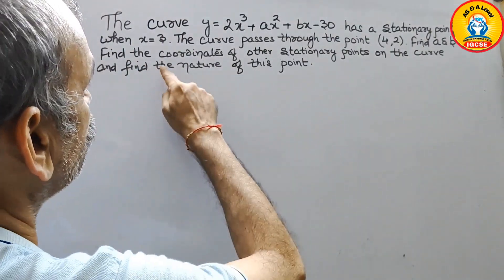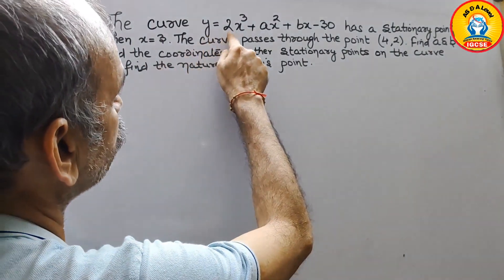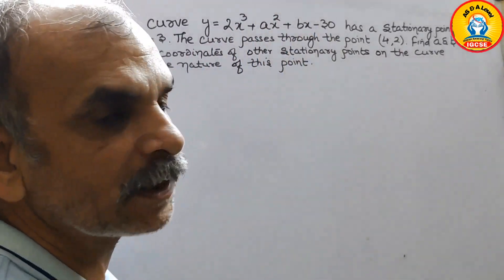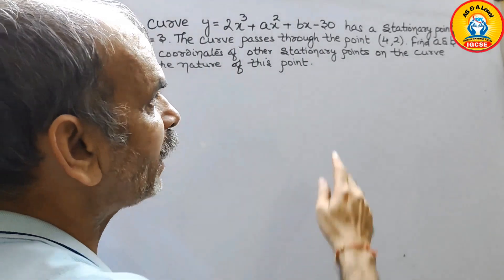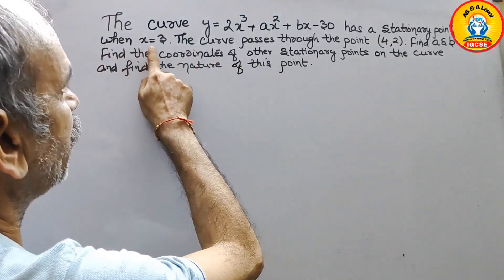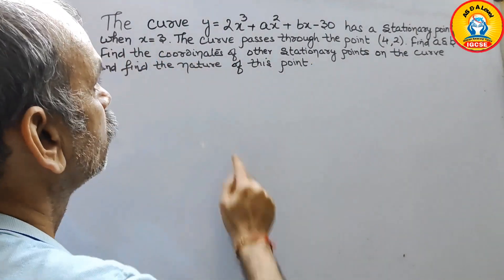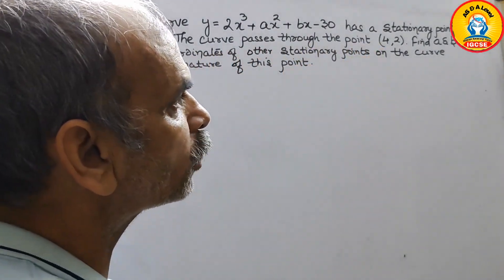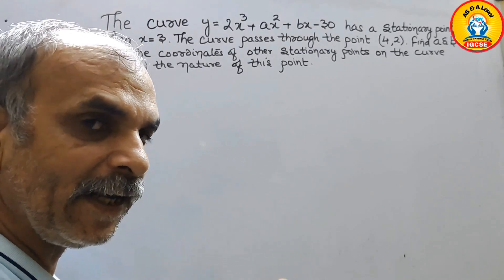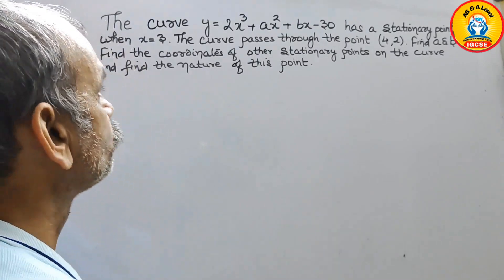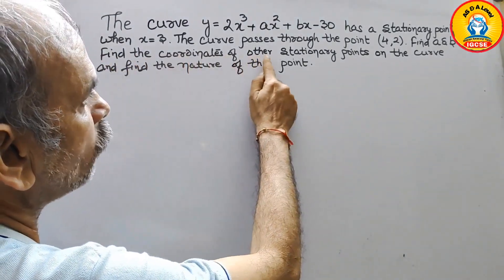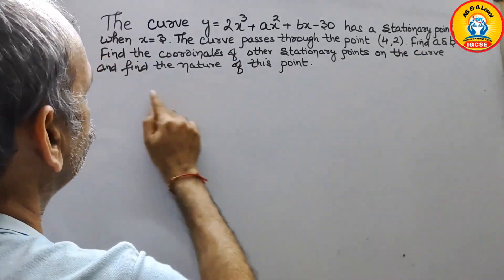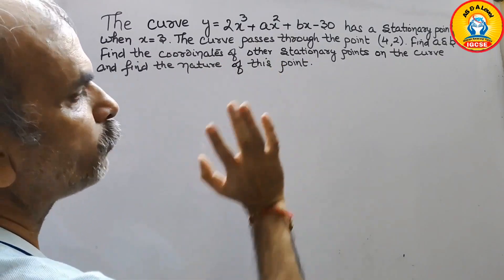The curve y equals 2x³ plus ax² plus bx minus 30 has a stationary point when x equals 3. The curve passes through the point (4, 2). Find a and b. Find the coordinates of other stationary points on the curve and find the nature of this point.